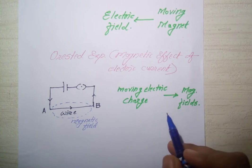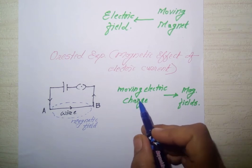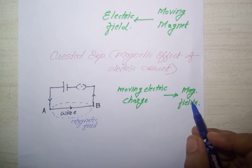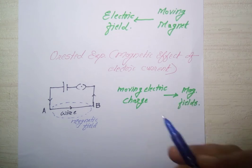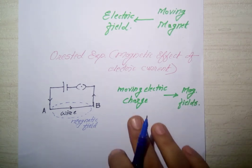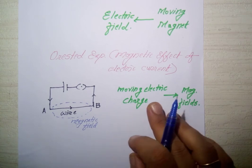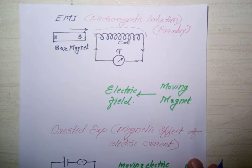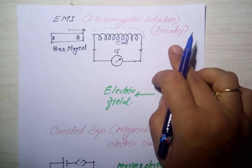So scientists had one question: as the moving electric charge can give a magnetic field, then can a moving magnet give an electric field? That was proved by another scientist - Faraday.